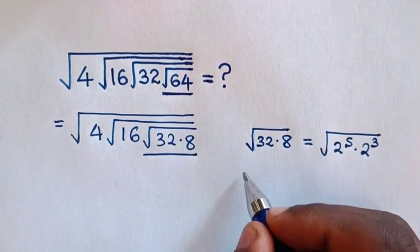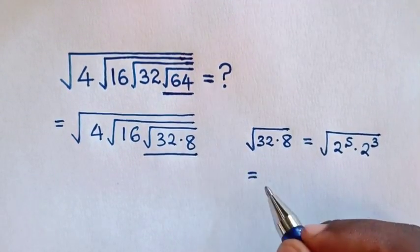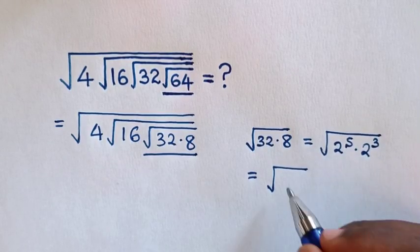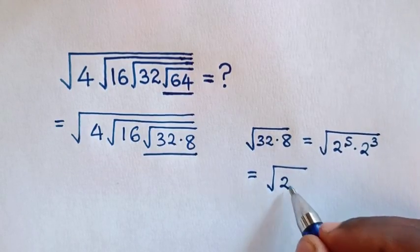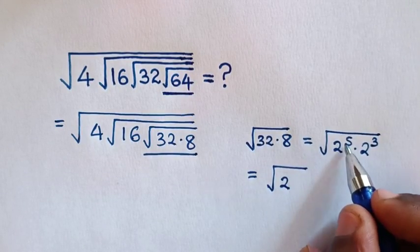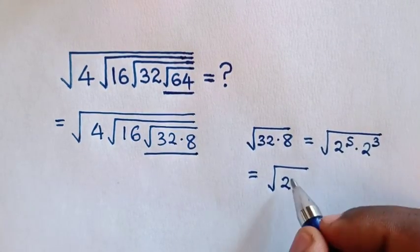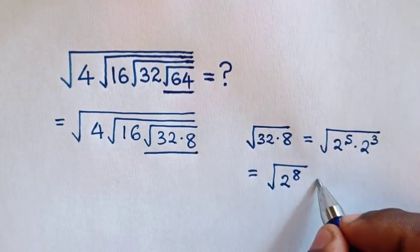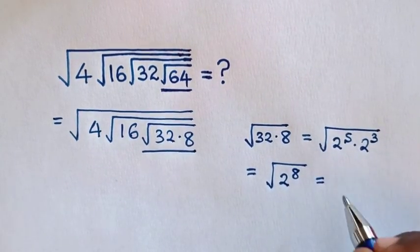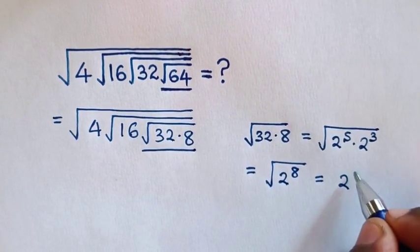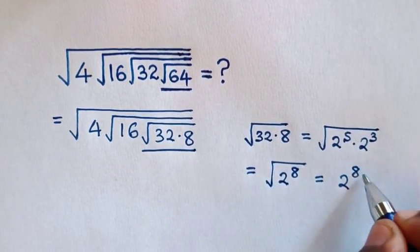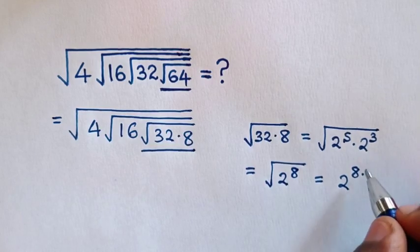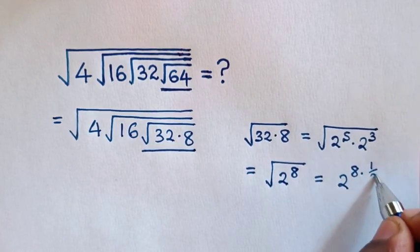Then it will be equal to square root of — same base of 2 — power of 5 plus 3 is power of 8. Then it will be equal to 2 to the power of 8, and times square root is the same as power of half.